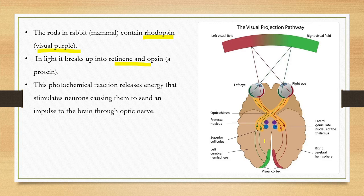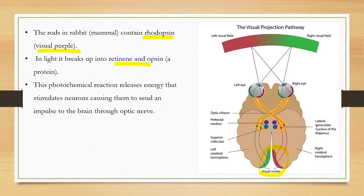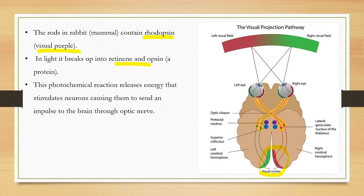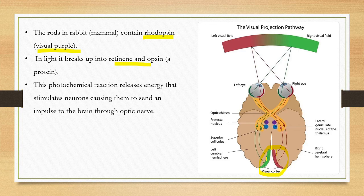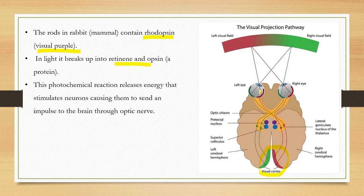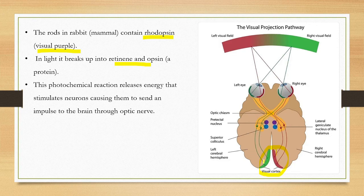In the optic nerve, the stimulation sends an image to the visual cortex. In light, rhodopsin breaks forming products retinine and opsin. This stimulates neurons in the optic nerve. In humans, this is called the optic chiasma. Left image goes to right visual cortex, right image goes to left visual cortex for image formation.